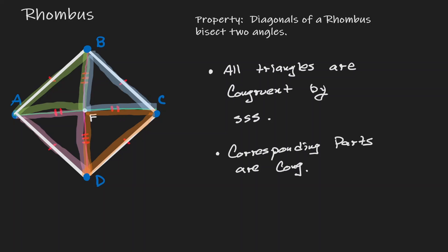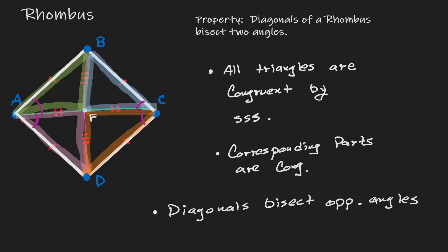The corresponding parts we want to concentrate on are angle DAF and angle BCF — notice that they are of the same measurement. In addition, angle BAF is going to be congruent to angle FCD. We have four angles and they're all equal to each other, which means they were cut in half. And if they were cut in half, then we can claim that the diagonal is the one who cut it in half. Therefore, we can make the claim that diagonals bisect opposite angles. The same can be said about the diagonal that runs vertically, BD.